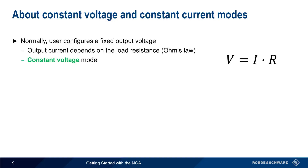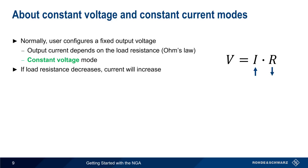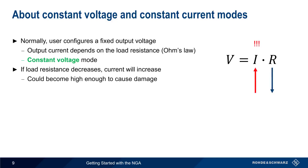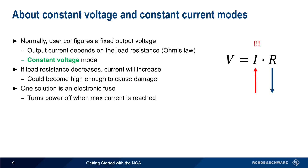Normally, the user of a power supply configures a fixed output voltage. In this case, the output current depends on the load resistance, as per Ohm's law. This is called constant voltage mode, because the supply will hold the voltage constant, even if the load resistance and therefore current change. Note that if the load resistance decreases, the amount of current supplied will increase. A large drop in load resistance, therefore, could lead to a current that's high enough to cause damage.